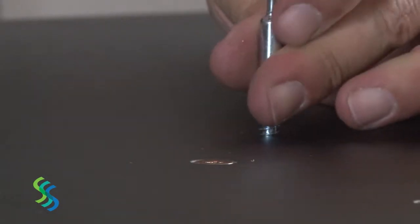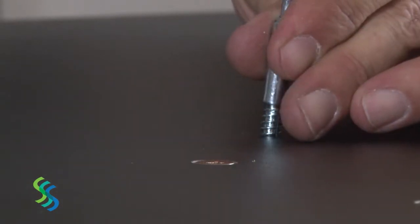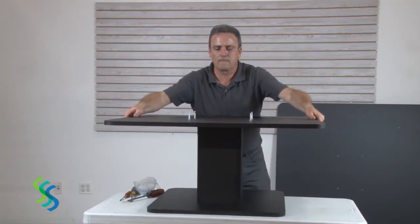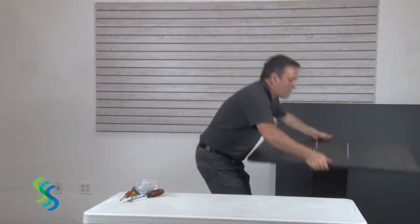Then screw the cam lock screws into the bottom of the middle tier in order to secure the stand that supports the middle tier. Assemble the support stand for the middle tier in the same way as the stand for the top tier.